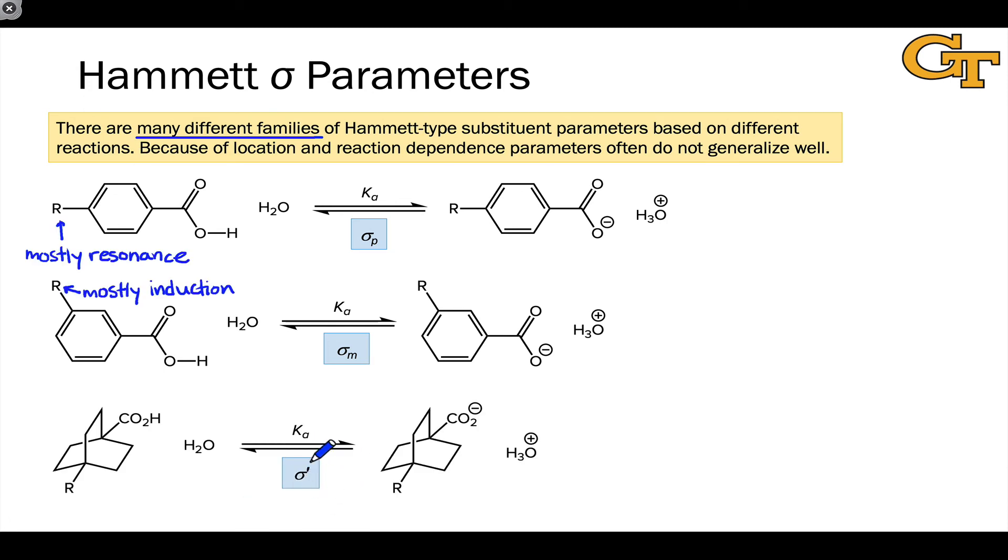There are also Hammett sigma values called sigma prime that actually measure neither resonance nor induction, but what we might call through-space effects. These are also called field effects. The basic idea here is that R is exerting an influence on the acidity of this carboxylic acid only through space. It's far away from the carboxylic acid, so inductive effects are pretty weak, and there's no resonance contact between R and the carboxylic acid group. So sigma prime measures field effects, the third kind of structural effect that R can have on the acidity of this carboxylic acid group.